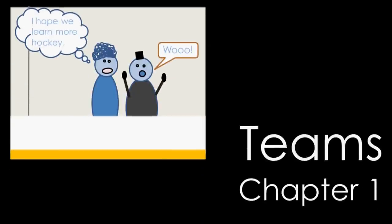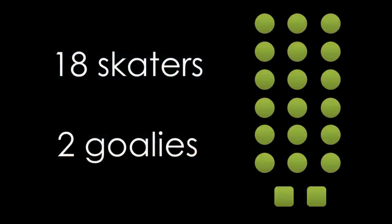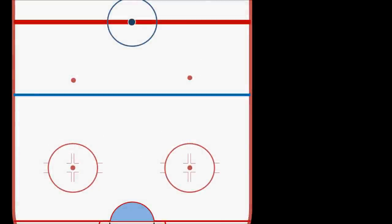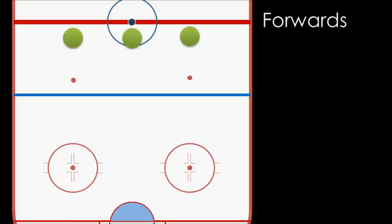Chapter 1: How are teams set up? Each team in the NHL for each particular game will have 20 players. 18 of them will be skaters and 2 will be goalies — just a starter and a backup goalie. They won't all play at one time, so at any one time each team will have 6 players on the ice: 5 skaters and 1 goalie. 3 of the skaters will be what are called forwards, whose main job is to shoot the puck into the other goal and score points. These three forwards are the left wing, the center, and the right wing.